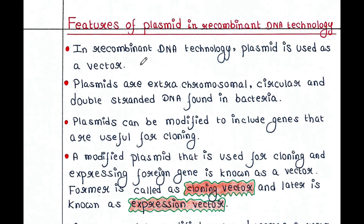In recombinant DNA technology, plasmid is used as a vector. In our last lecture, we have seen what is vector. Plasmids are extra-chromosomal — they are circular and double-stranded DNA found in bacteria. You will get plasmids only in bacteria, that means prokaryotic cells; in eukaryotic cells, you will not get any plasmid. Plasmids can be modified to include genes that are useful for cloning. A modified plasmid used for cloning and expressing a foreign gene is known as a vector.